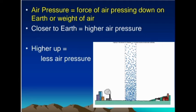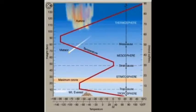In this layer, air moves both vertically and horizontally. The temperature in the troposphere decreases with increase in height above the mean sea level, roughly at a rate of 1 degree Celsius for every 165 meters of ascent. This is called the lapse rate.